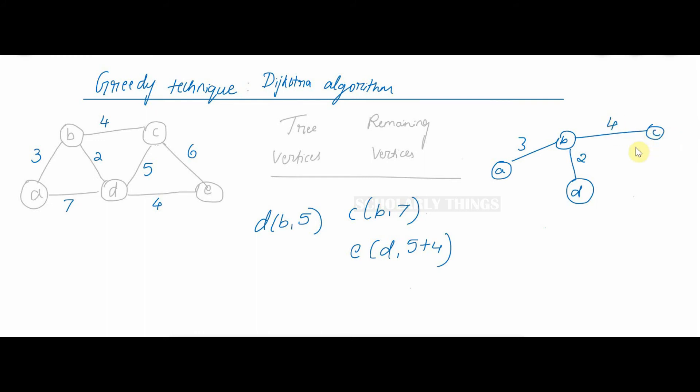Now we have covered the vertex C. The remaining vertex is E. If I consider reaching E via C, it will be 3 + 4 + 6 from the root node A. That is 13.